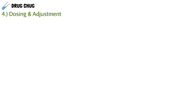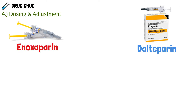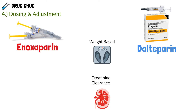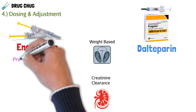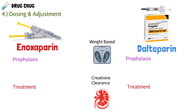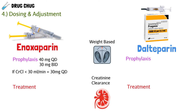Now let's talk about dosing and adjustments. Anytime you dose these drugs, remember two things: weight-based dosing and creatinine clearance. For enoxaparin, the prophylactic dose is either 40 mg subcutaneous every day or 30 mg subcutaneous twice a day. But if creatinine clearance is less than 30 — meaning kidney function isn't good — we can only give 30 mg subcutaneously every day.